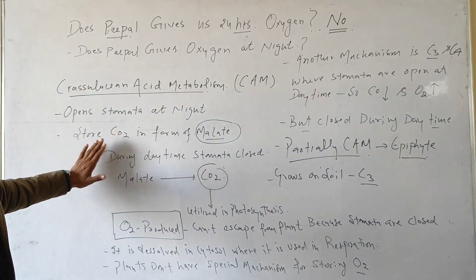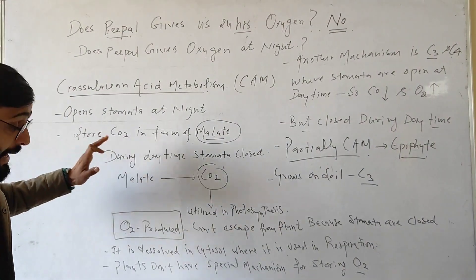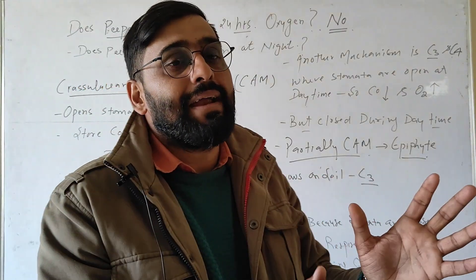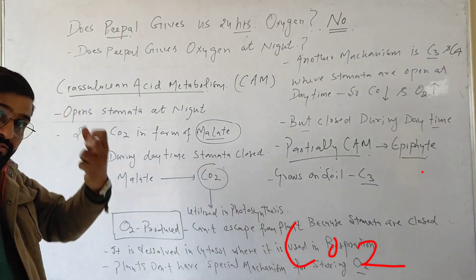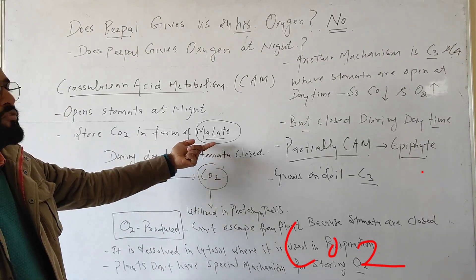These plants open stomata at night and when they open their stomata at night, they will store oxygen, they will take oxygen from environment and they will store it in the form of malate.